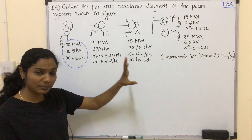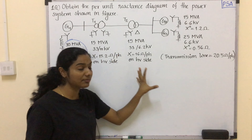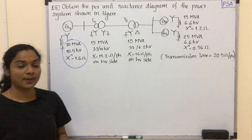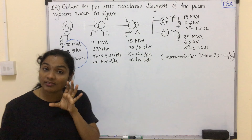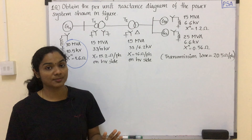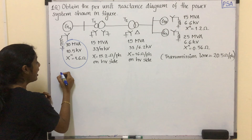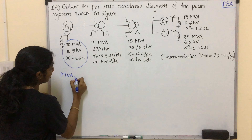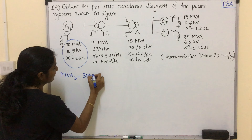Normally, if they didn't mention anything, we choose the first generator value as the base value. So as per our first step, one common MVA — we will choose 30 MVA.